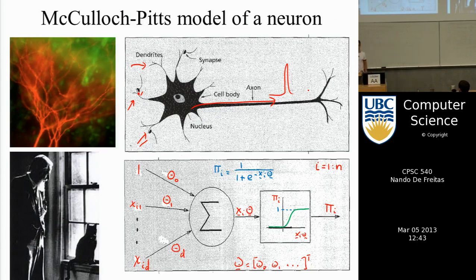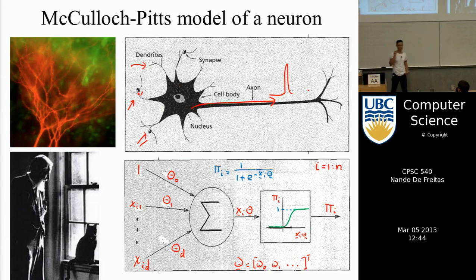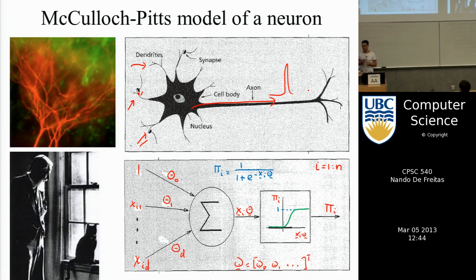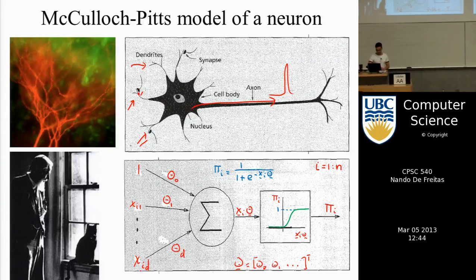That's essentially the idea of the model of McCulloch and Pitts — a very simplified model of a neuron. There are neurons out there that have 100,000 dendrites, so they're extremely complex. Some researchers dedicate their entire lives to studying one particular form of motor neuron. But in this abstraction, the idea is you have d inputs.